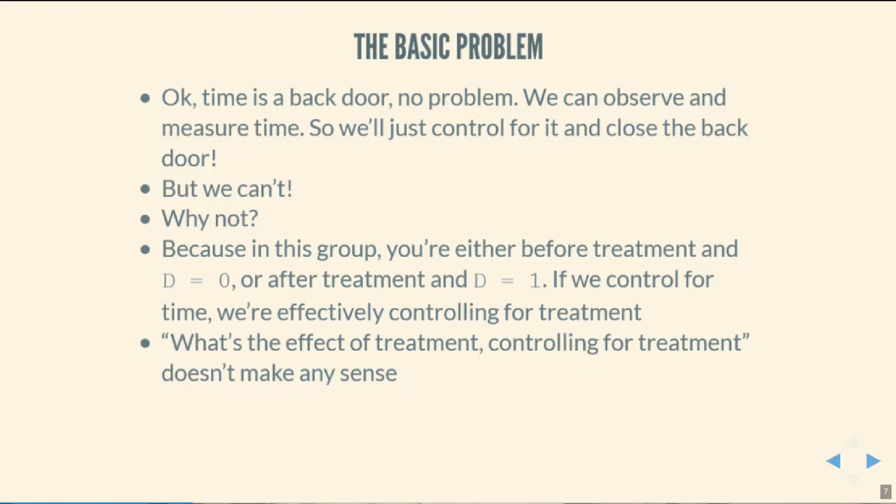We have an obvious fix: we can measure time, so why don't we just control for it? Well, it turns out we actually can't. Time and treatment are perfectly locked together — there's a before period and an after period. If we control for time, we look at what part of the treatment we can explain with time and then subtract it out. If we do that, there's not going to be any variation in the treatment left. You need some variation — some people with the treatment and some without — so we can't just control for time.